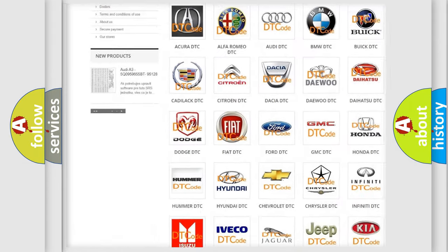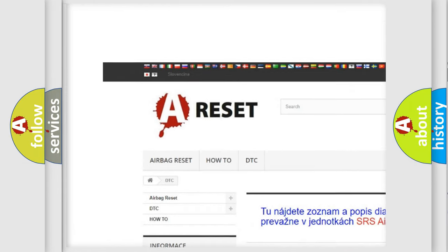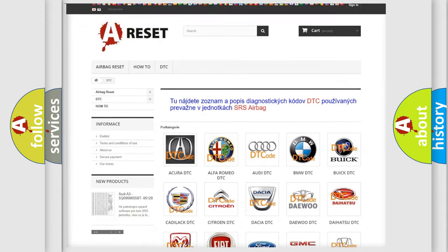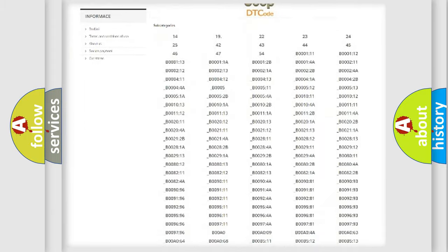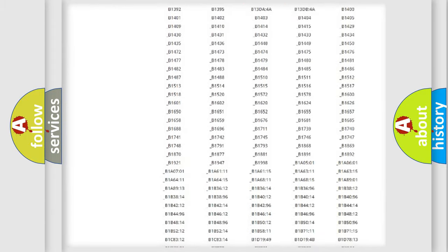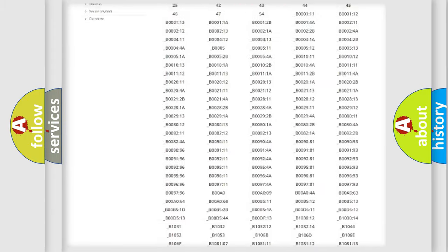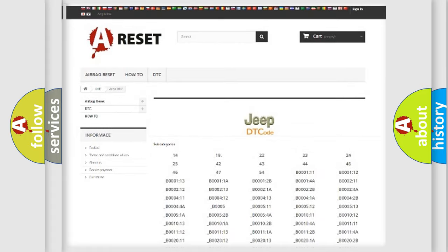Our website airbagreset.sk produces useful videos for you. You do not have to go through the OBD2 protocol anymore to know how to troubleshoot any car breakdown. You will find all the diagnostic codes that can be diagnosed in Jeep vehicles, and also many other useful things.